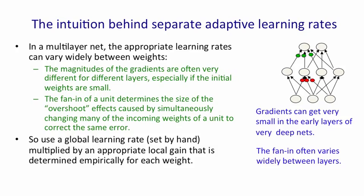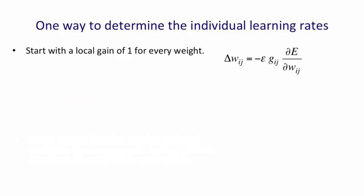The idea is that we're going to use a global learning rate, which we set by hand, and then we're going to multiply it by a local gain that's determined empirically for each weight. A simple way to determine what those local gains should be is to start with a local gain of 1 for every weight.